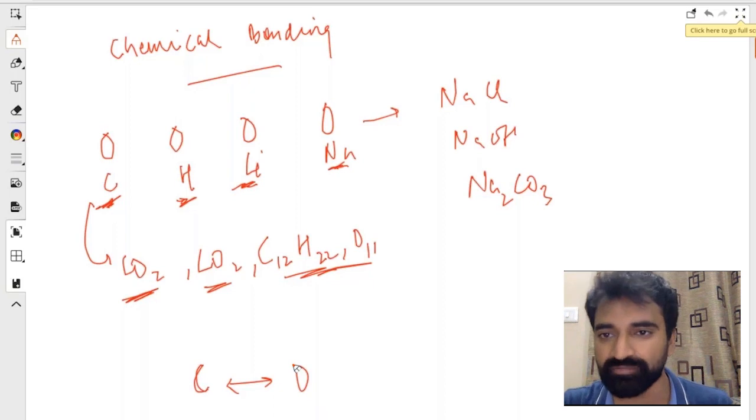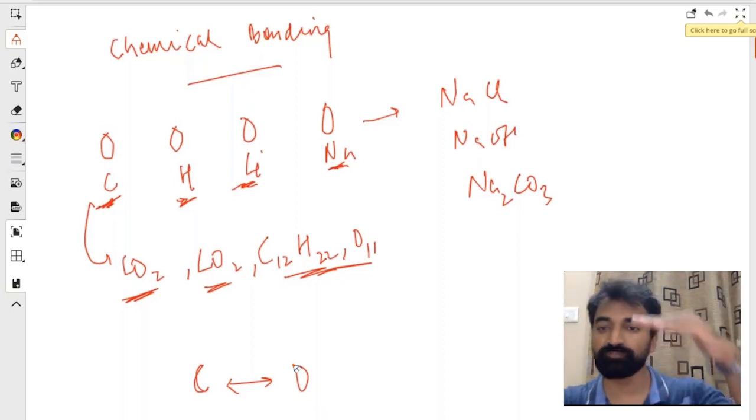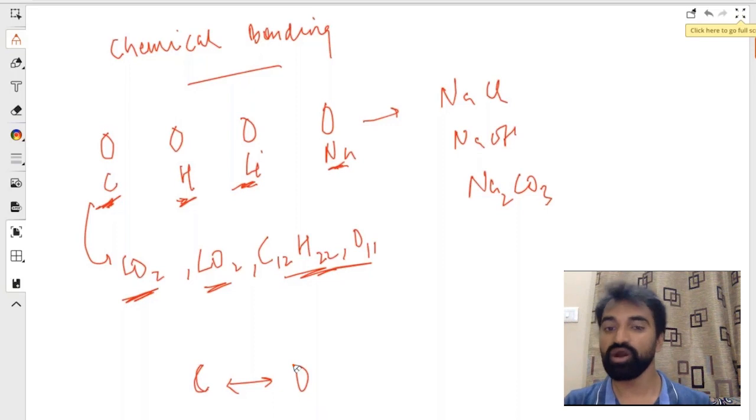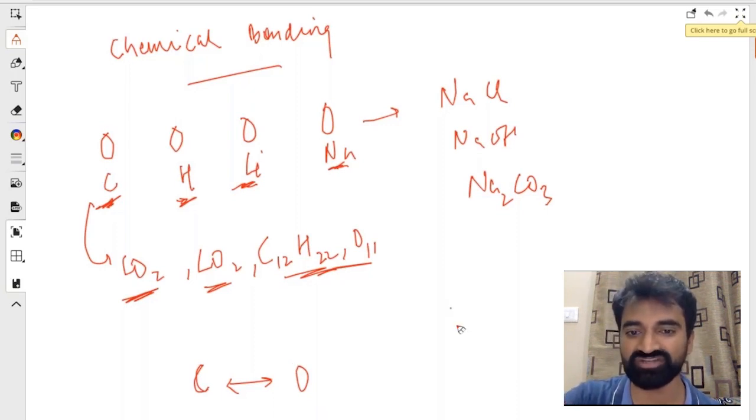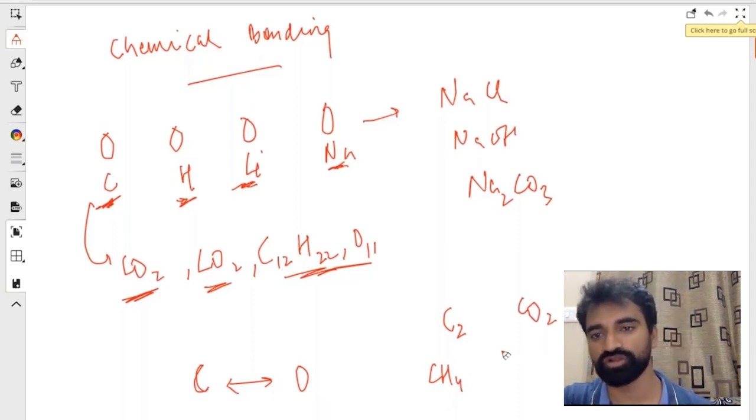This bonding depends on the overall stability of the product. If the product is more stable, the bonding will occur in greater amount. If the product is less stable, the bonding will occur in lesser amount. Also, if the product is not stable at all, the bonding will not occur at all. For example, C2 doesn't really exist. On the other hand, CH4 does exist, CO2 does exist, and so on and so forth.